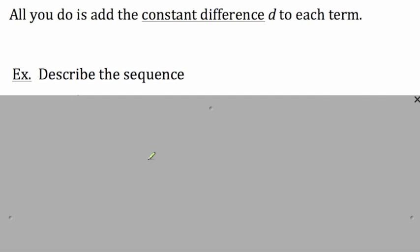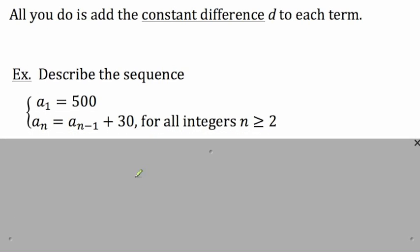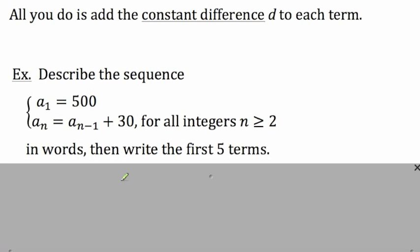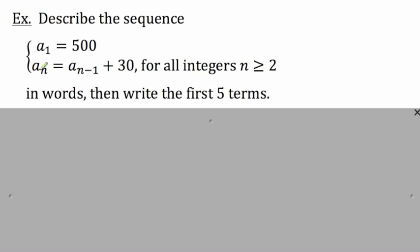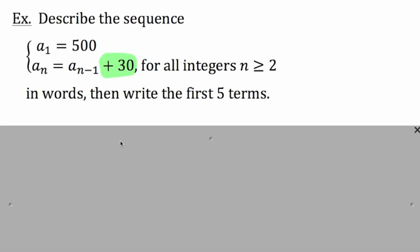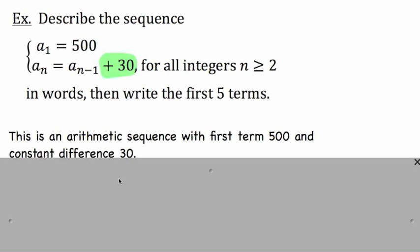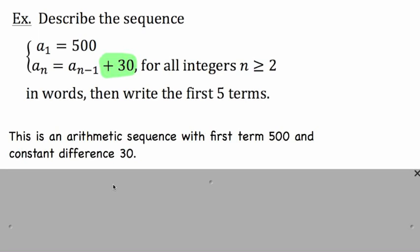Let's take a look at an example of an arithmetic sequence. Let's describe the sequence where the first term is 500 and each term thereafter is generated by taking the previous term and adding 30. We want to describe that sequence in words and then write the first five terms. Since each term after the first is generated by taking the previous term and adding 30, we know this is an arithmetic sequence with a first term of 500 and a constant difference of 30.